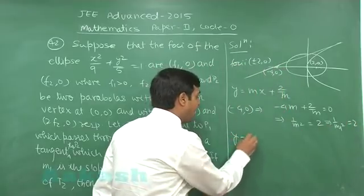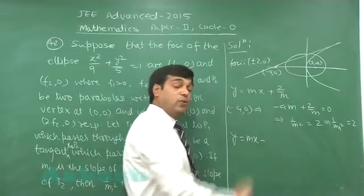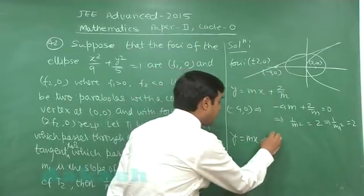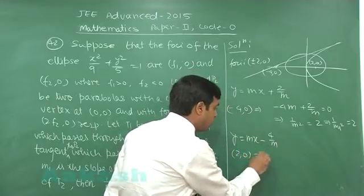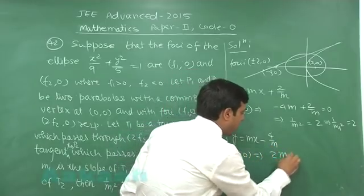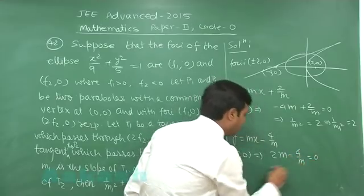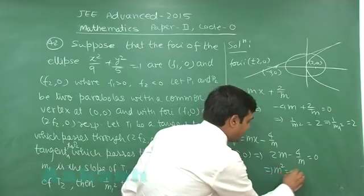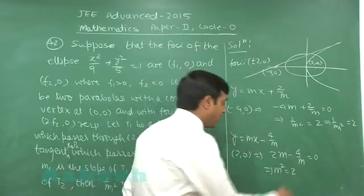For the second parabola, y = mx - 4/m. It passes through (2,0). So 2m - 4/m = 0, which gives m² = 2. This m² is actually m₂².